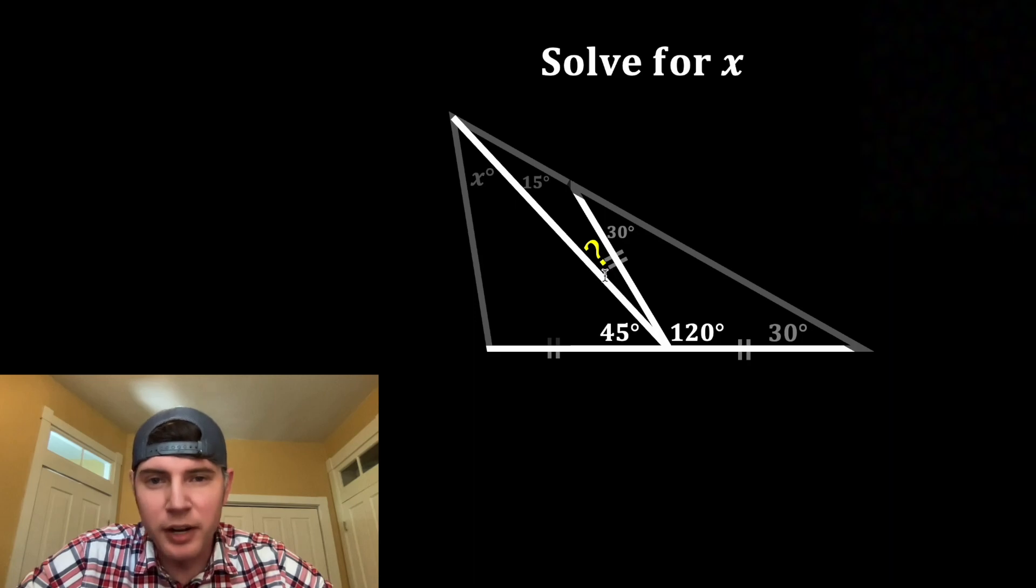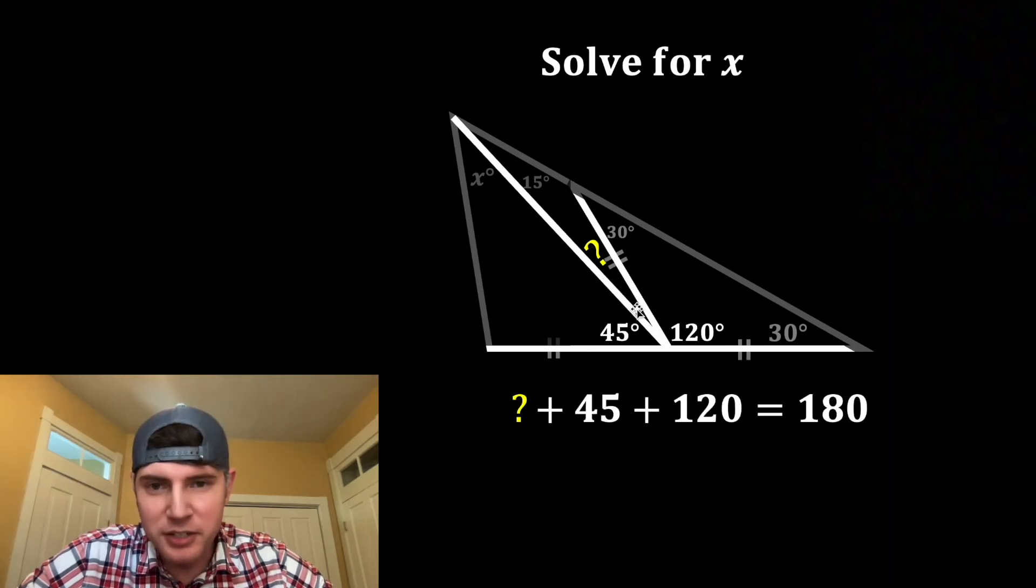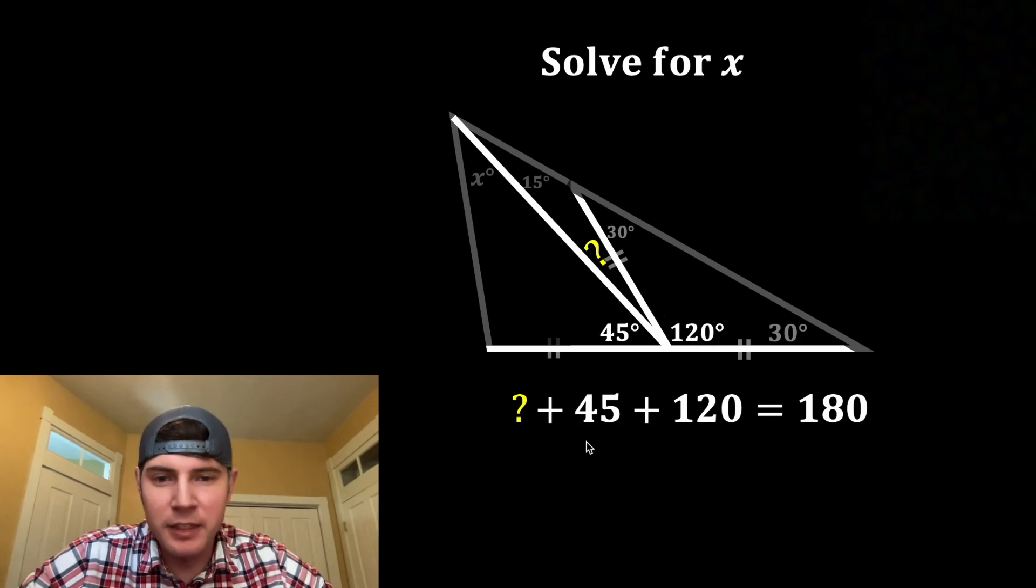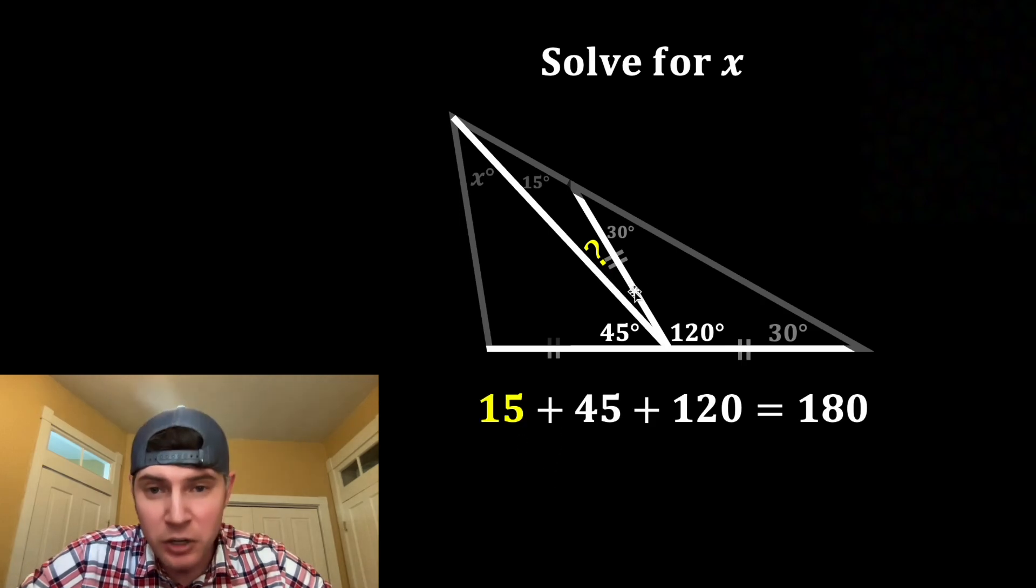Next, I want to find this angle right here. And we're going to use these three angles to get it. This angle plus this angle plus this angle will all add up to 180 degrees. And this statement will be true for 15. So we know that this angle right here is 15 degrees.